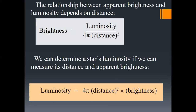We can determine a star's luminosity if we can measure its distance and its apparent brightness. Rearranging: luminosity equals 4π times distance squared times brightness — where 4π d² is the area of the sphere at the Earth's location.